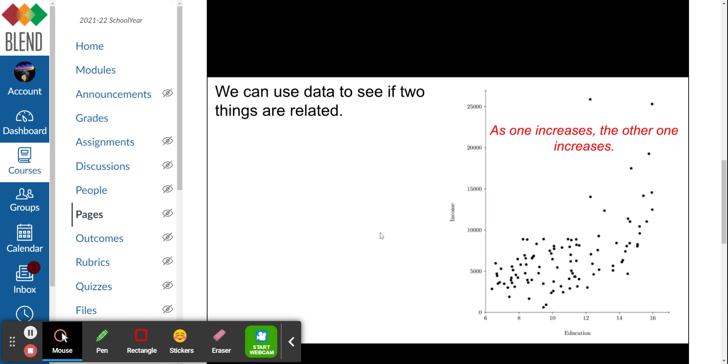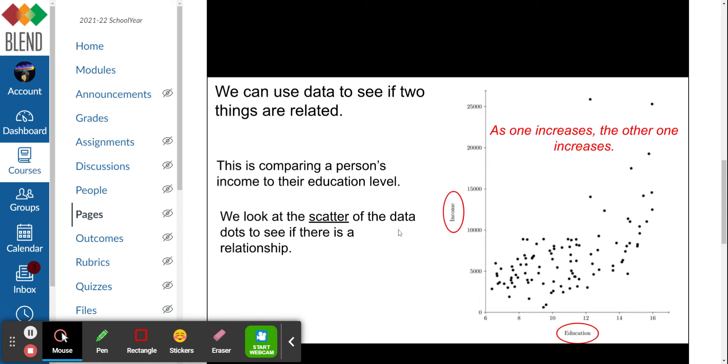Alright, so we can use this data to see if two things are related. Education and income does look related on this one. The more years of education someone has, the greater the income. This is comparing a person's income to their education level. We look at the scatter of the data in dots to see if there's a relationship, and there's somewhat of a relationship because these dots seem to go higher on the y as they go higher on the x.